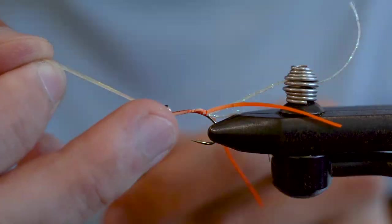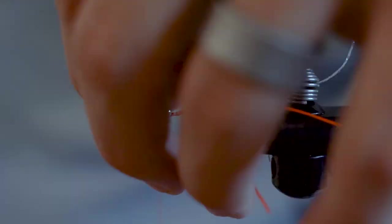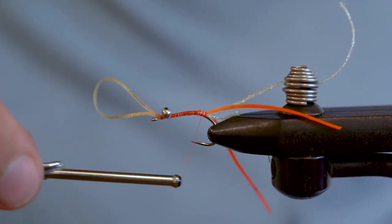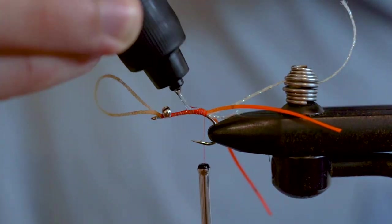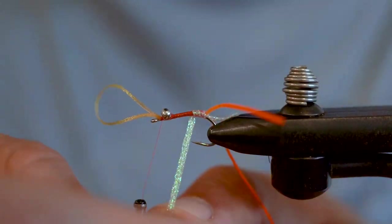Now I'm going to pull those rubber legs forward and trap them down all the way up in front of the barbell. I'll lay down some tighter wraps over those rubber legs and then I'm going to lay down some UV adhesive over top.